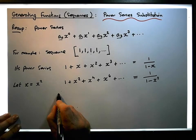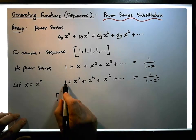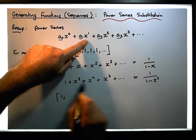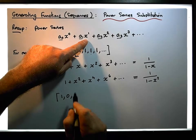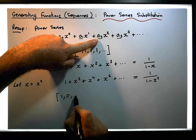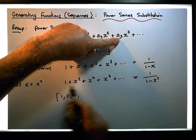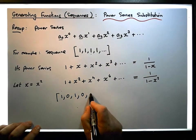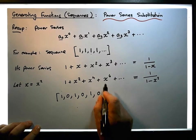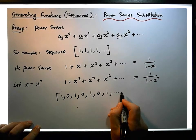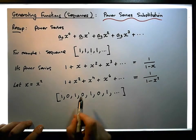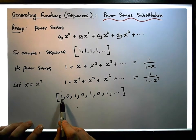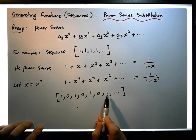This particular power series encodes a sequence. The constant term is 1, so that's a_0. There's no coefficient of x, so it's 0. The coefficient of x² is 1. There's no x³, so it's 0. The coefficient of x⁴ is 1. There's no x⁵, so it's 0. The coefficient of x⁶ is 1, and so on. So this particular power series encodes the alternating sequence: 1, 0, 1, 0, 1, 0, 1...